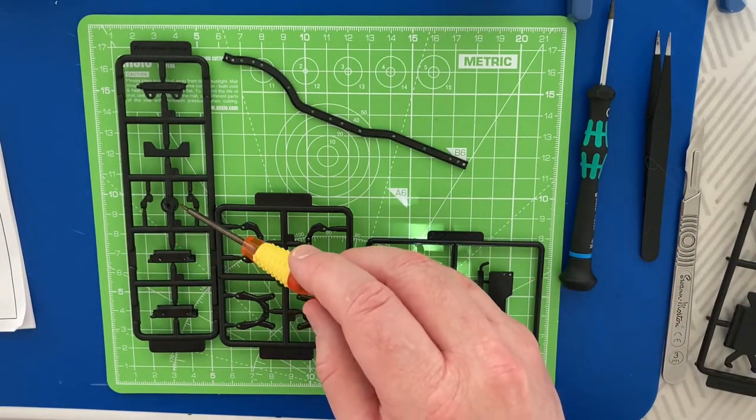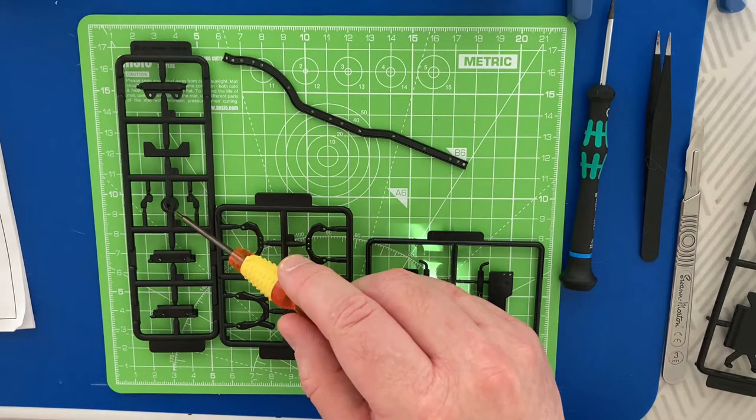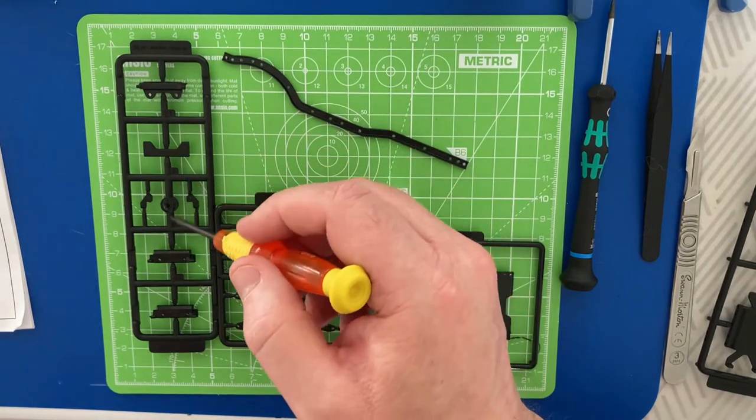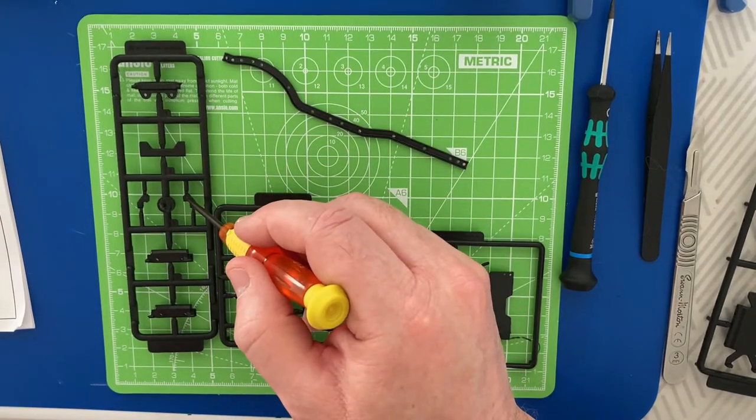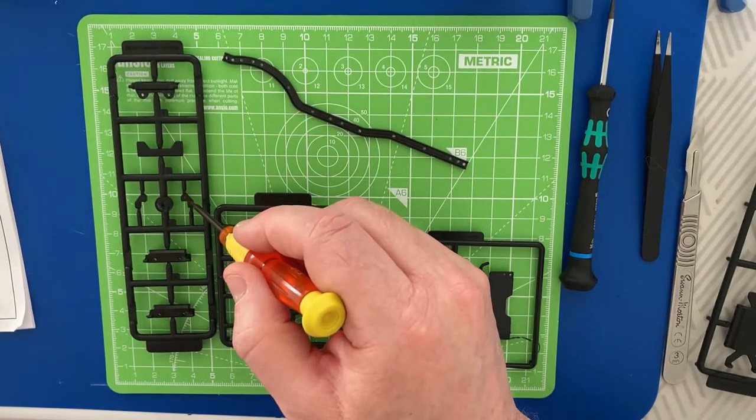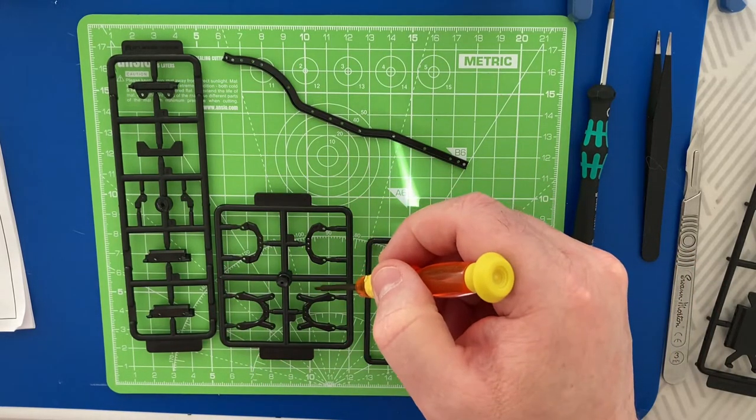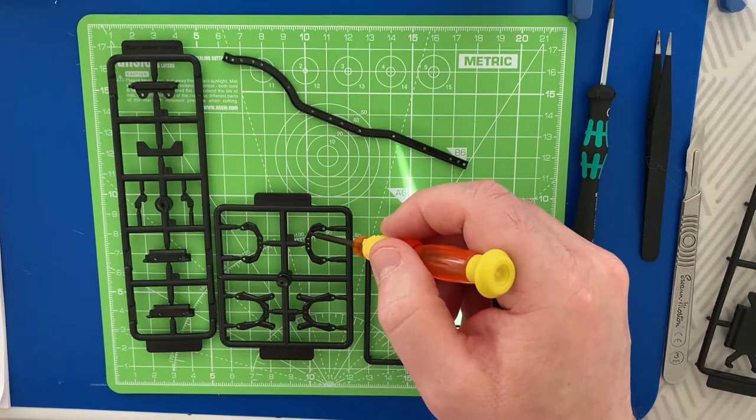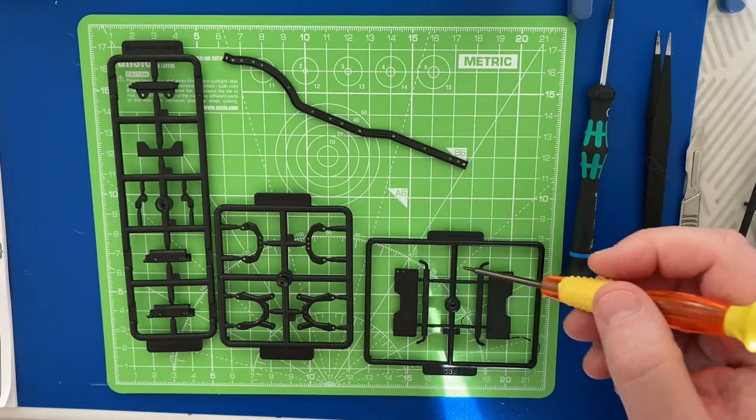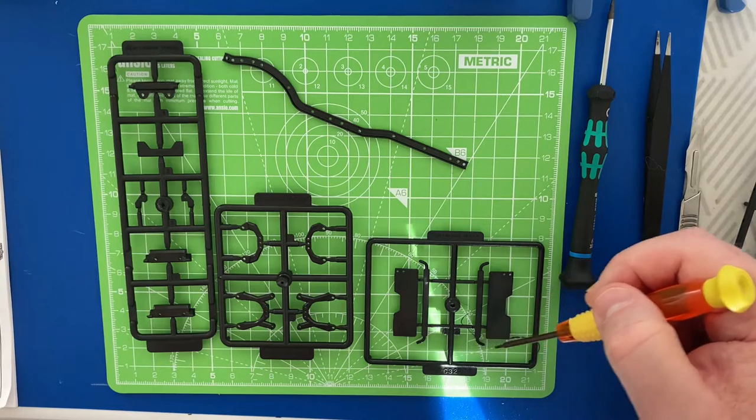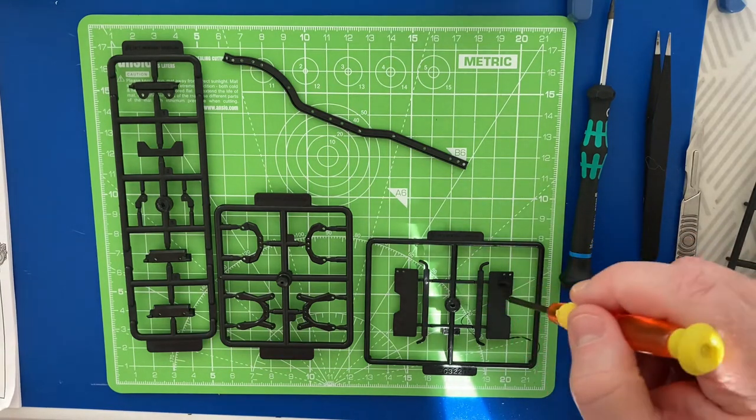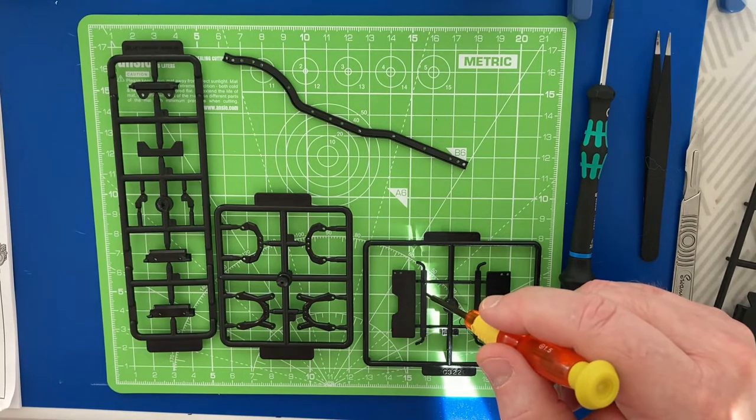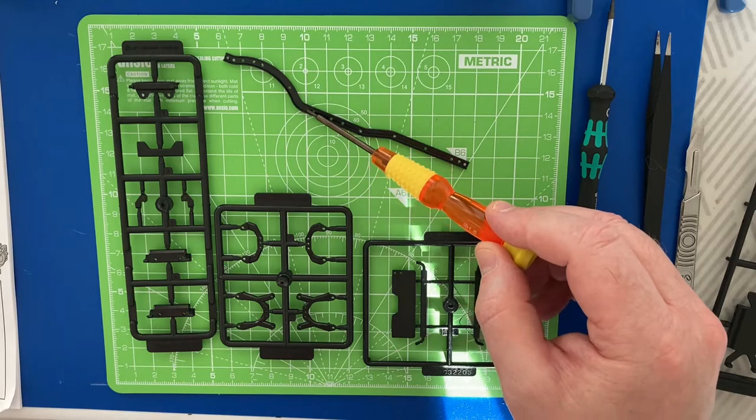So this is the parts tree 35205, and we're going to need to get this part here. This is parts tree 35204, and we need to get this part here. And this is parts tree 32205, and we need to get all these parts here. And we need to screw them onto the main rail.